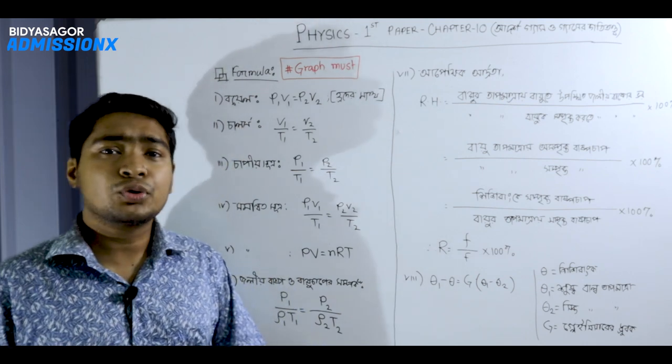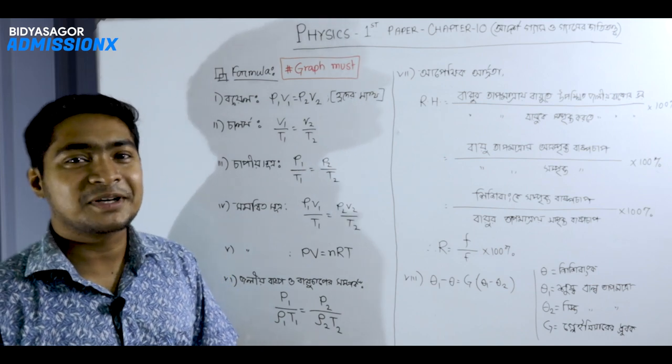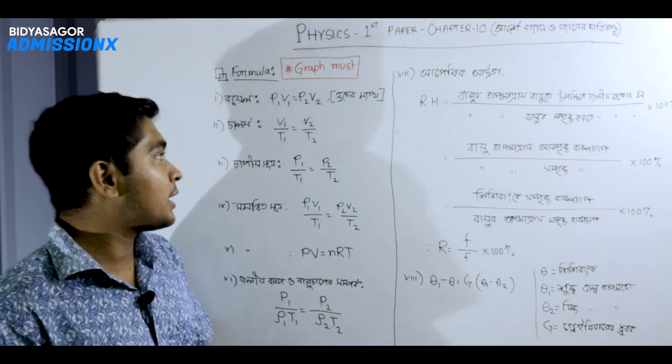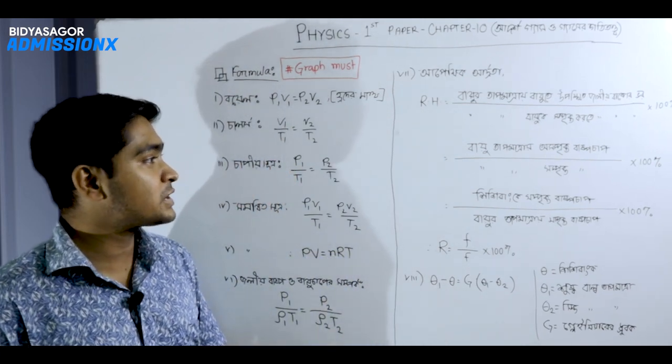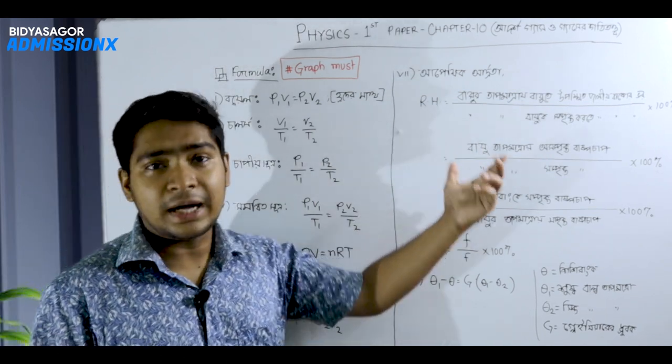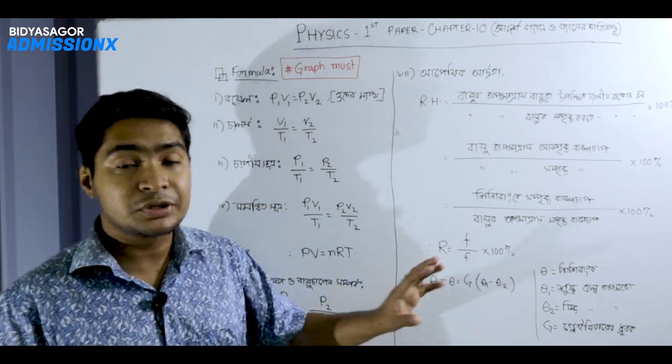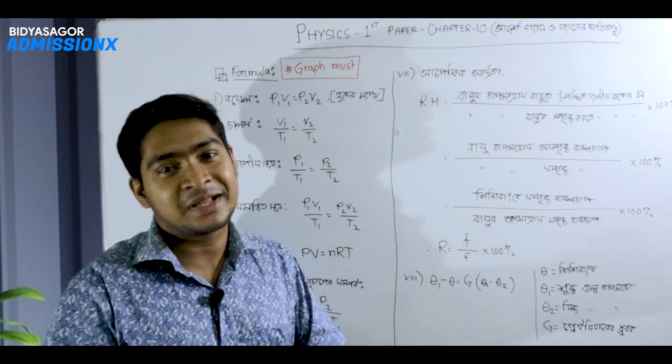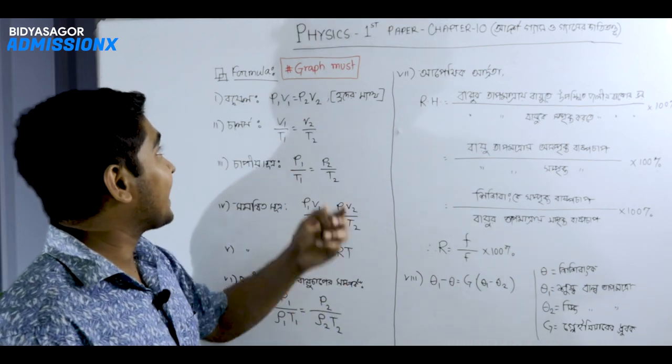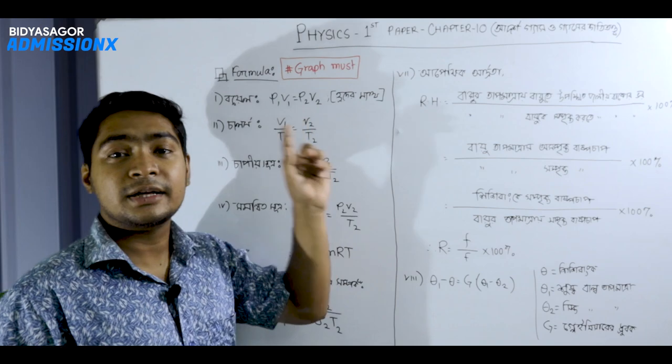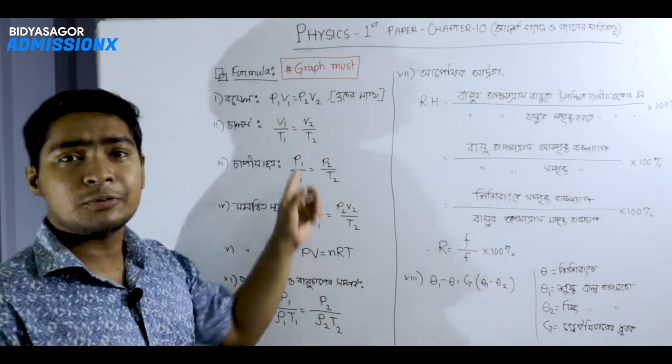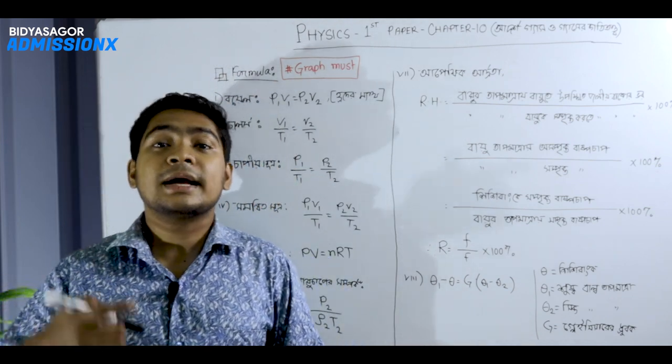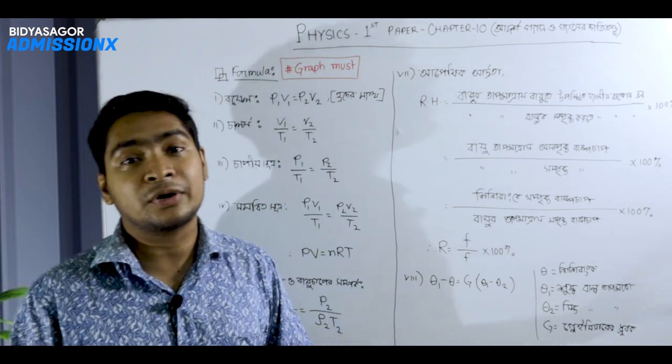We will start with this chapter, we will start with formula D, because this chapter will be very related to chemistry. So we will start with chemistry, physics, and math. We have to start with this thing and then we will see the graph. The most effective graph must be seen in this formula.